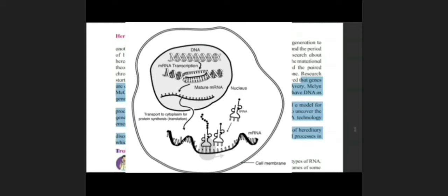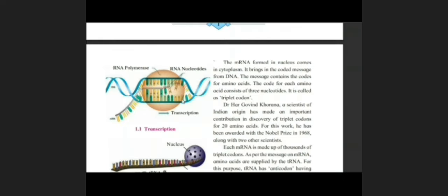Now, second step, that is translation. The mRNA formed in nucleus comes into the cytoplasm. It brings in code message from DNA. This is ACGTT, not the alphabets. These are the nucleotides. So they are present in three pairs. Therefore, they are called triplet codons. While reading this codon, we have to read that AUGCAA or ACGTTA. These types of triplet codons are present.